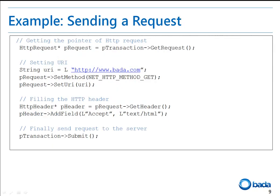Now let's look at how to send an HTTP request. I have taken the pointer of the HTTP request to use various methods of this object. Then I set the URL to http://www.bada.com. I took the header and added the required info to it. The AddField method adds a named field — a field name and field value pair — to the current instance of the HTTP header. Once the header addition is complete, I submitted the request to the server by calling the submit method.